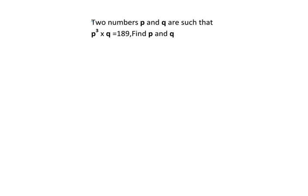Two numbers P and Q are such that P cubed times Q equals 189. Find the value of P and Q. So we are given P³ multiplied by Q should give us 189. We are supposed to